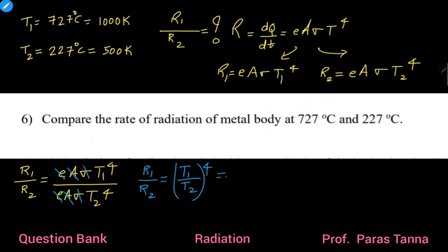the whole raised to 4, that is, 1000 divided by 500, the whole raised to 4, that is 16, or we can say 16 is to 1. So, the required ratio of rate of radiation, that is R1 divided by R2, that is DQ by DT for first case divided by DQ by DT for second case, equals 16 is to 1.